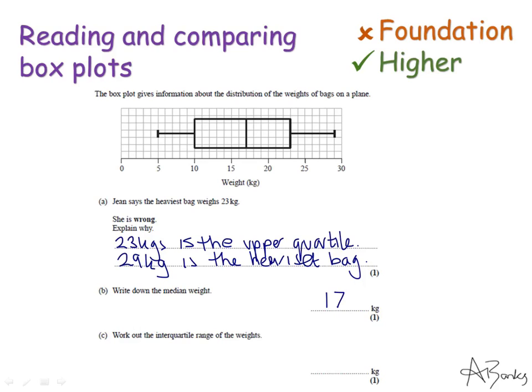The next one is slightly harder. It says work out the interquartile range. So I need to find the upper quartile and take away the lower quartile. So the upper quartile is this 23. The lower quartile is 10. So I'm going to do 23 take away 10. So my interquartile range is 13.